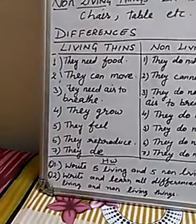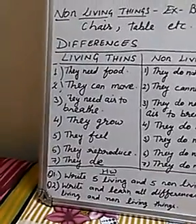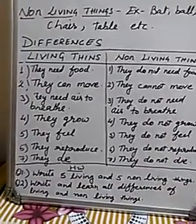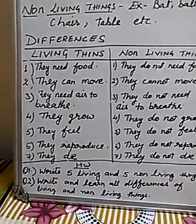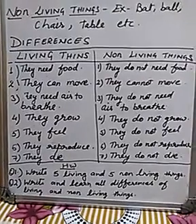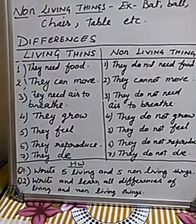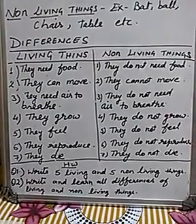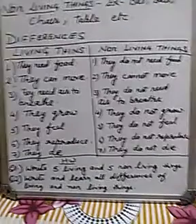The third difference is living things need air to breathe. They need air to breathe — saans lete hain. Human beings and animals breathe through their nose. Plants breathe through tiny pores present on the leaves, and these tiny pores are called stomata. Does a doll breathe? No — non-living things do not breathe.